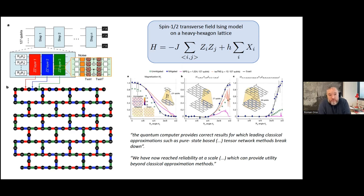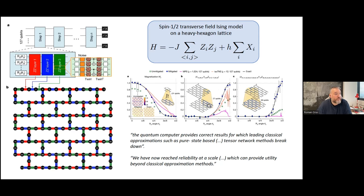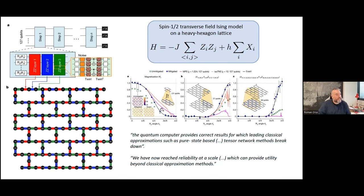These are examples of the results they got. They computed different observables — such as total average magnetization in the z direction as a function of an angle related to the magnetic field — and expectation values of non-local observables. You can see the results from the quantum processor without error mitigation, which are way off, versus with error mitigation, which matches pretty well the quasi-exact calculation.